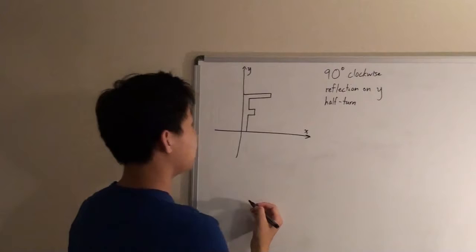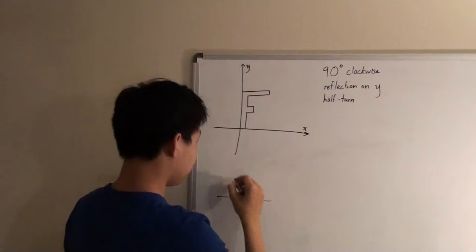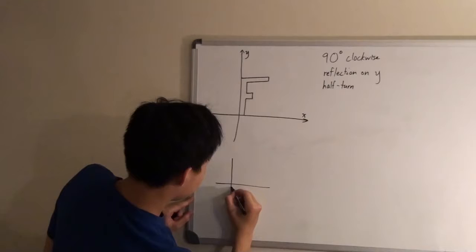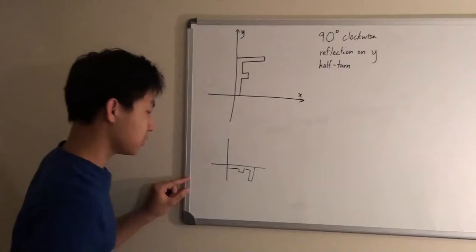So if we start off with the 90 degrees clockwise, then the figure would turn 90 degrees, so it would be something like this.